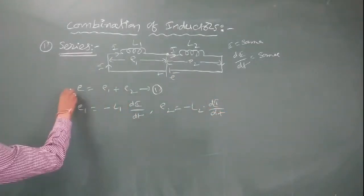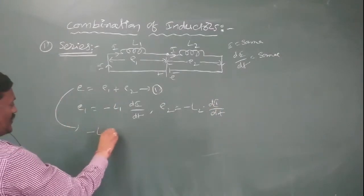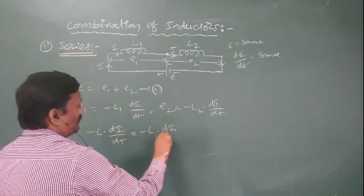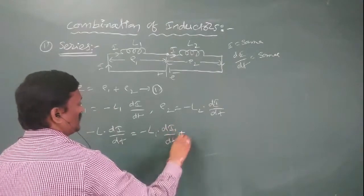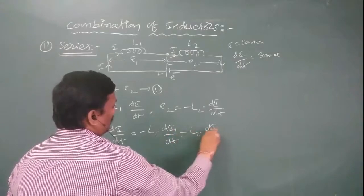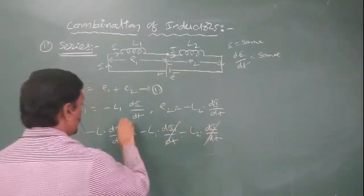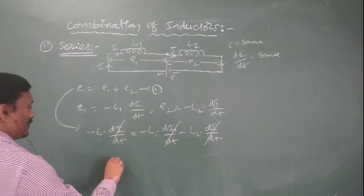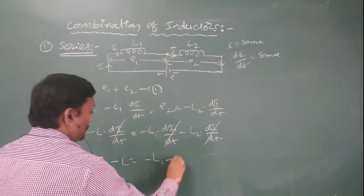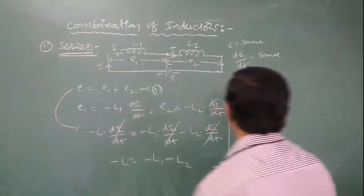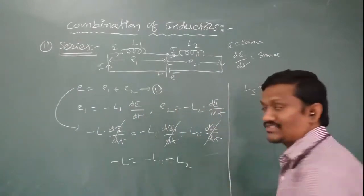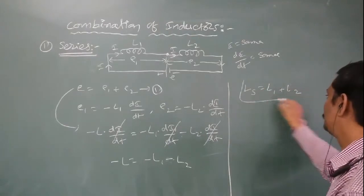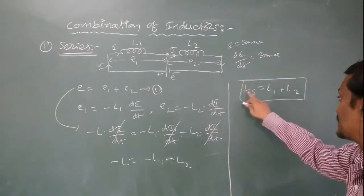Applying the E1 and E2 values into the equation: E equals minus L times dI/dt, which equals minus L1 times dI/dt plus minus L2 times dI/dt. All terms have dI/dt, which cancels. So minus L equals minus L1 plus minus L2. The minus signs cancel, giving the effective inductance L equals L1 plus L2 when two inductors are joined in series.